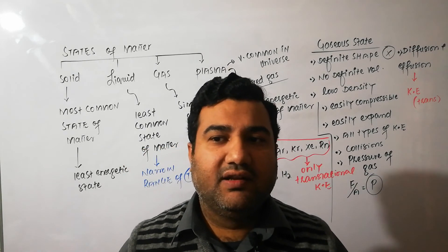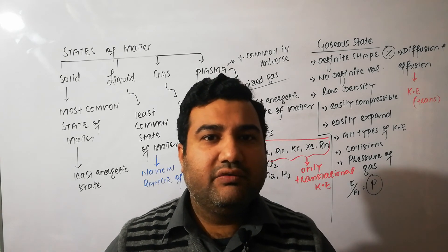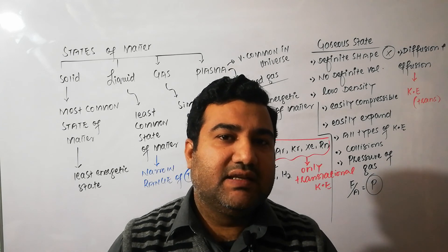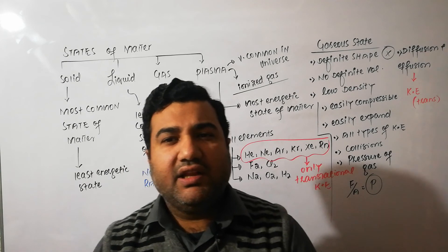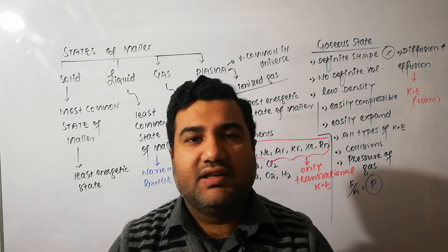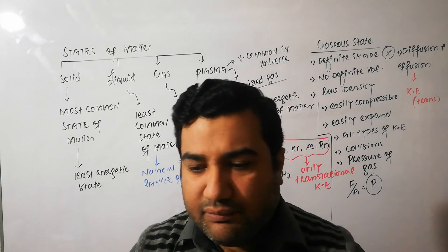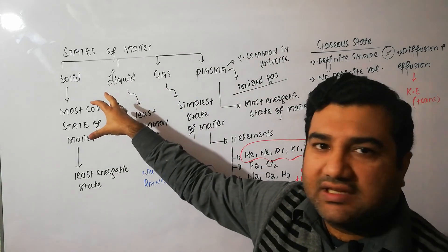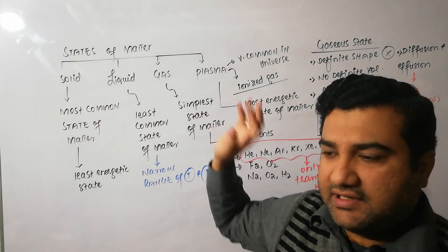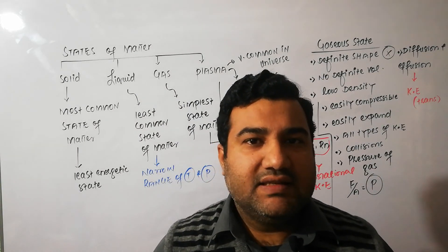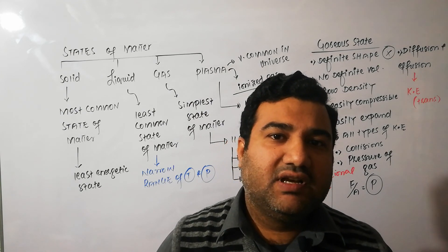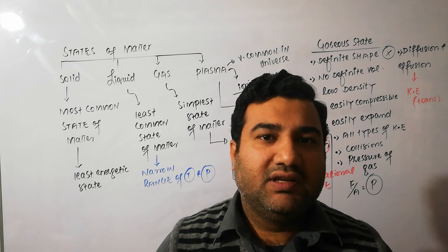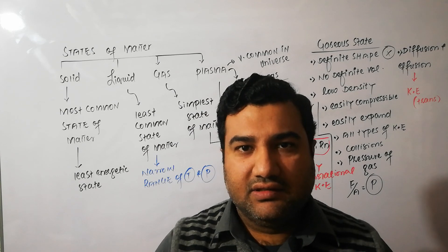For example, when you come home and feel the smell of tea being made spreading throughout the whole house, that is an example of diffusion. Similarly, if there is a tiny hole in a balloon and gas molecules are leaving through that tiny hole one by one, that is an example of effusion. These are certain important properties of gases that differentiate the gaseous state from the other two fundamental states — solid and liquid. Next time we will come up with the laws that explain the behavior of gases. Goodbye!